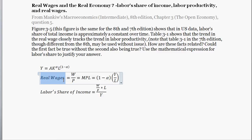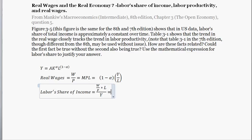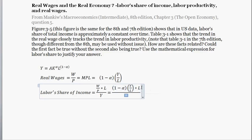Real wages is a function of (1 minus alpha) and Y divided by L. So labor share of income simplifies as follows: you have the real wage times the quantity of labor L, divided by total output Y. A lot of this simplifies — you have Y in the numerator and Y in the denominator, so those two things cancel out.